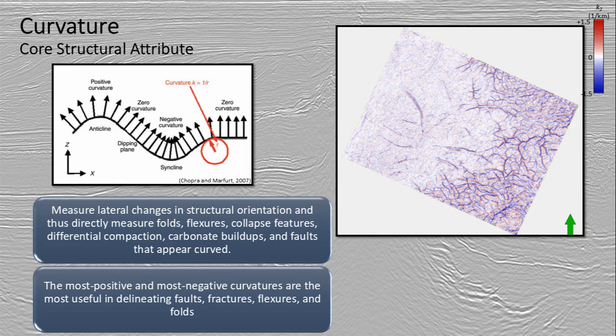Another attribute you can run is curvature, which measures lateral changes in structural orientation and helps in identifying folds, flexures, and faults. Oftentimes we co-render the most positive and most negative curvatures to help us find the faults, as shown here.